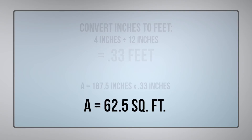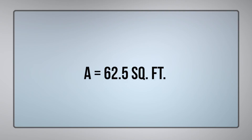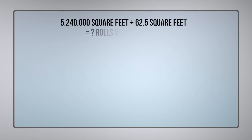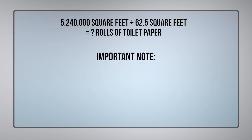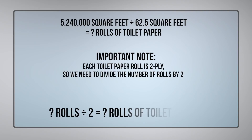Now we'll use this number to calculate how many rolls of toilet paper can be made from one parent roll. Keep in mind that the toilet paper is two-ply, so we'll have to divide the total number of rolls by two.